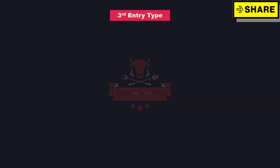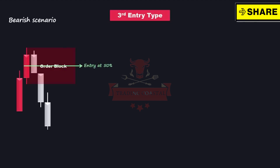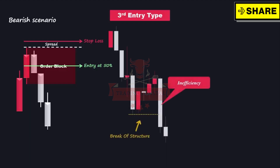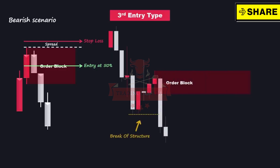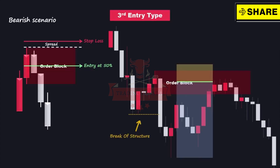The third type of entry, which I personally prefer and utilize more frequently in my trading plan, involves placing the entry at the midpoint of the order block zone once a valid order block is identified. In the case of a bearish scenario, the stop loss is positioned a spread size above the highest point of the order block. This entry type offers a reward-to-risk ratio that is at least twice as large as the regular entry types, due to the refined entry point and smaller stop loss size. By employing this approach, we can potentially enhance the profitability of our trades while effectively managing risk.